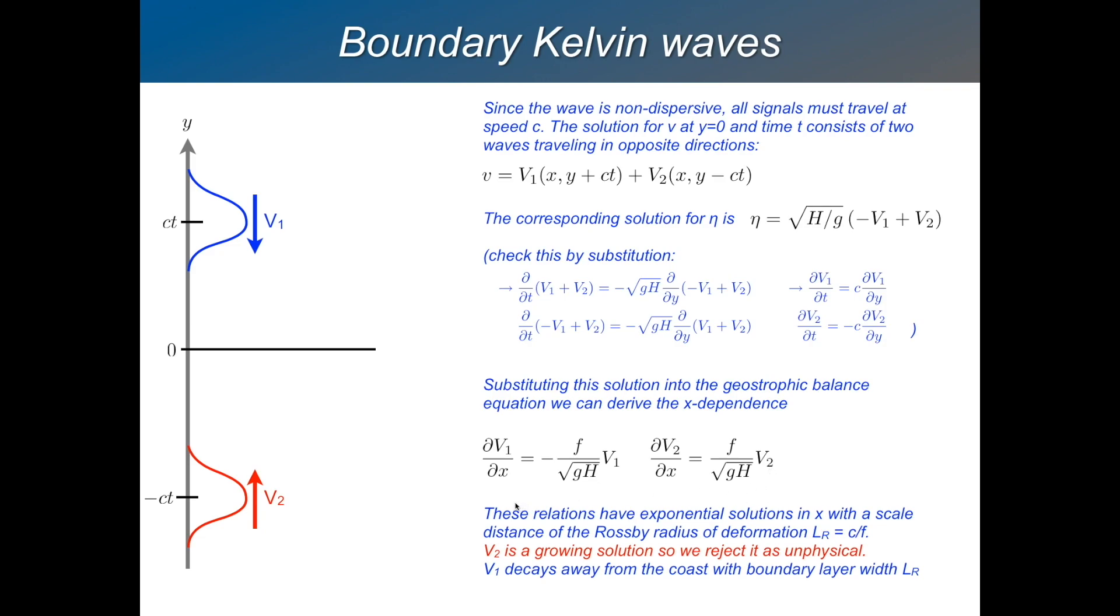So they have, in X, they have exponential solutions. So V1 has a decaying exponential solution in X. V2 has a growing exponential solution in X, which cannot be matched with any realistic interior solution. So we reject the solution for V2 as being unphysical and we retain the solution for V1. So that implies that our Kelvin wave must be propagating southwards. It's only V1 which works. And it decays away from the coast, this coastally trapped wave solution, with a boundary layer width. You can see from these equations it's root GH over F, which is the Rossby radius.